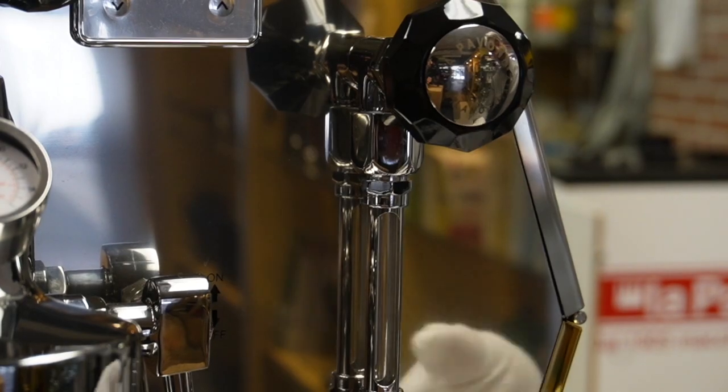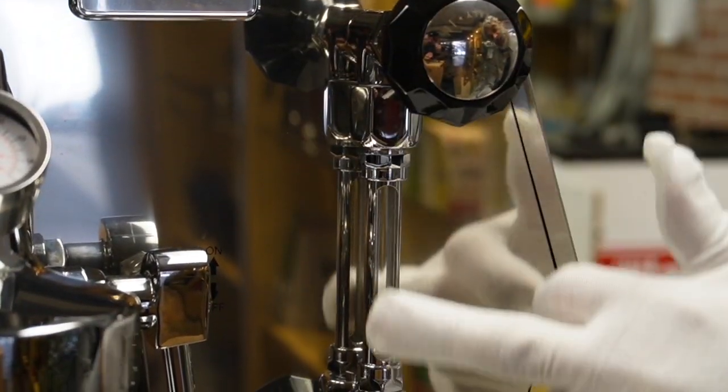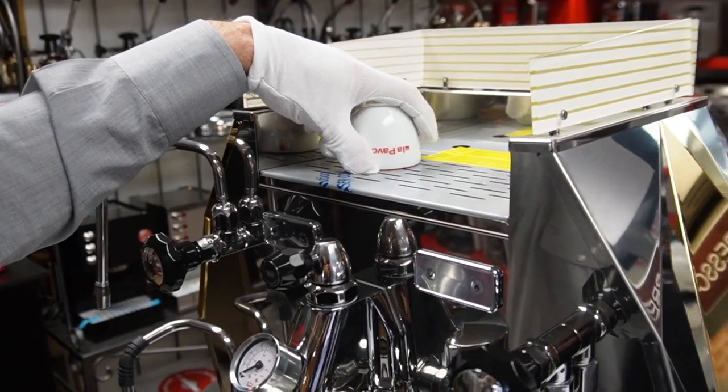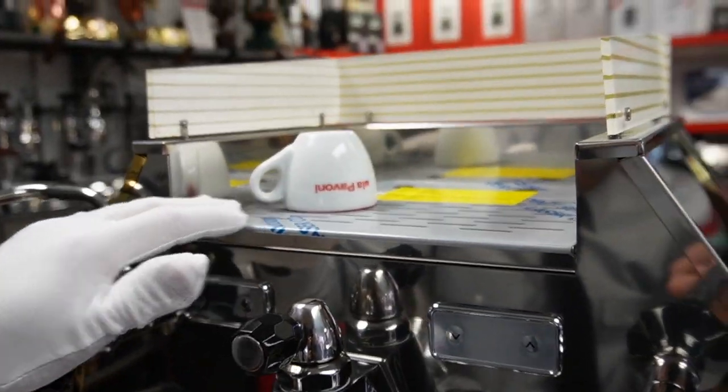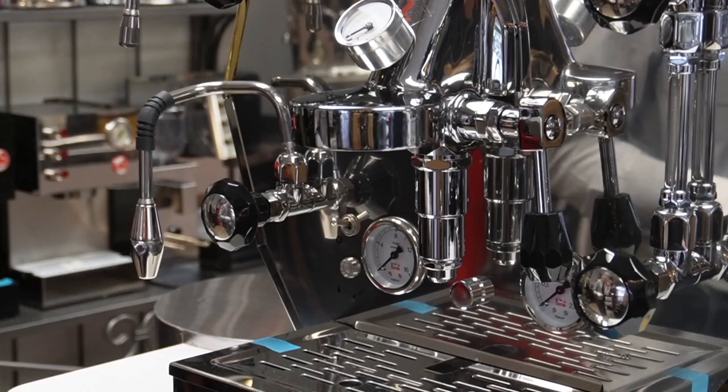Located on the right, the water level indicator complements Diamantina's aesthetics. The cup resting surface has plenty of space for your espresso or cappuccino cups.